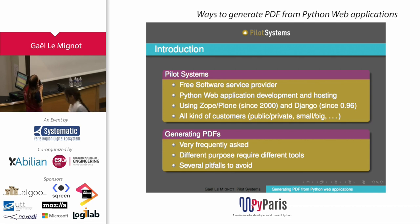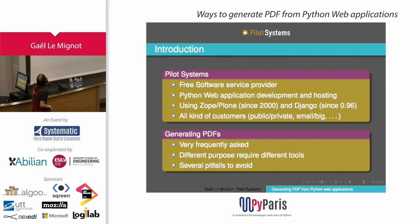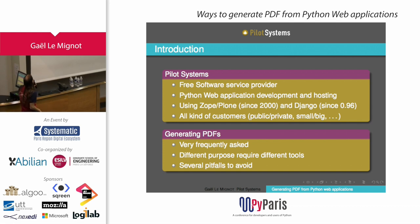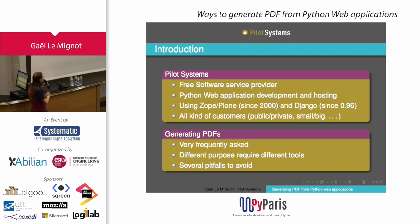Pilot Systems is a free software service provider here in Paris. We are quite small. We do mostly Python web applications, both development and hosting. We use, as frameworks, OpenERP since a long time and Django since almost as long as it exists. We have various kinds of customers, both from the public and private sectors, both very small and quite big.